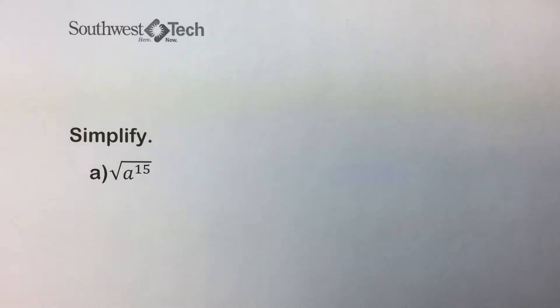If a radicand is an odd power, we can simplify by factoring. For square roots of powers, after we have simplified, the radicand never contains an exponent greater than 1.